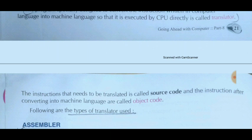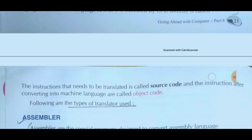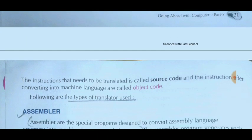The instruction that needs to be translated is called source code — that is, the program written by the programmer. After converting into machine language with the help of a translator, it produces another file called object code. So source code is the original file written by the programmer, and after translating, whatever we get in machine language is called object code.